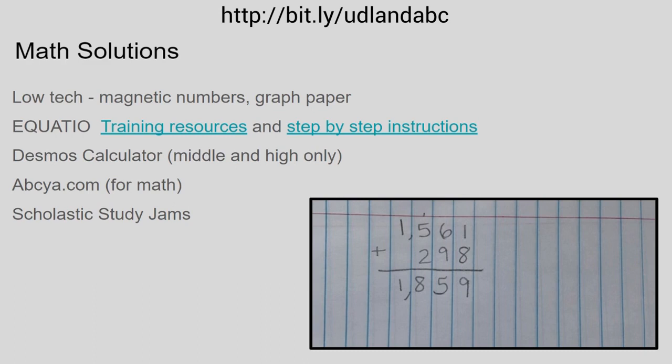EquatIO lets you type math into a Google Doc. It lets you type the symbols in ways that a traditional keyboard doesn't. It also will read the symbols out loud correctly to you. If you are interested in using that, please reach out to your specialized instructional facilitator for assistive technology — your CIFAT or your IFT will know about this as well. EquatIO is not a calculator. It has a graphing function that is powered by Desmos, but it does not answer equations for you.